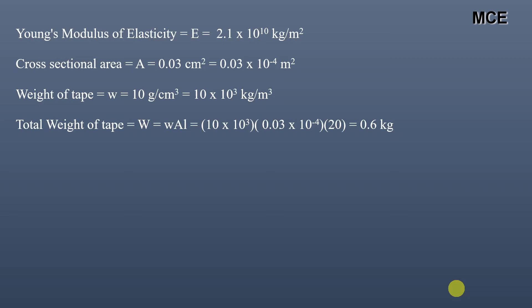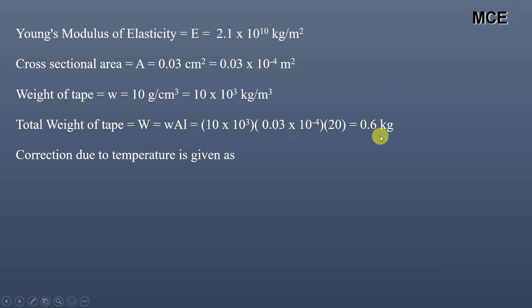The total weight of the tape equals weight per unit volume multiplied by volume, which equals w × cross-sectional area × length of tape. This works out to 0.6 kg.